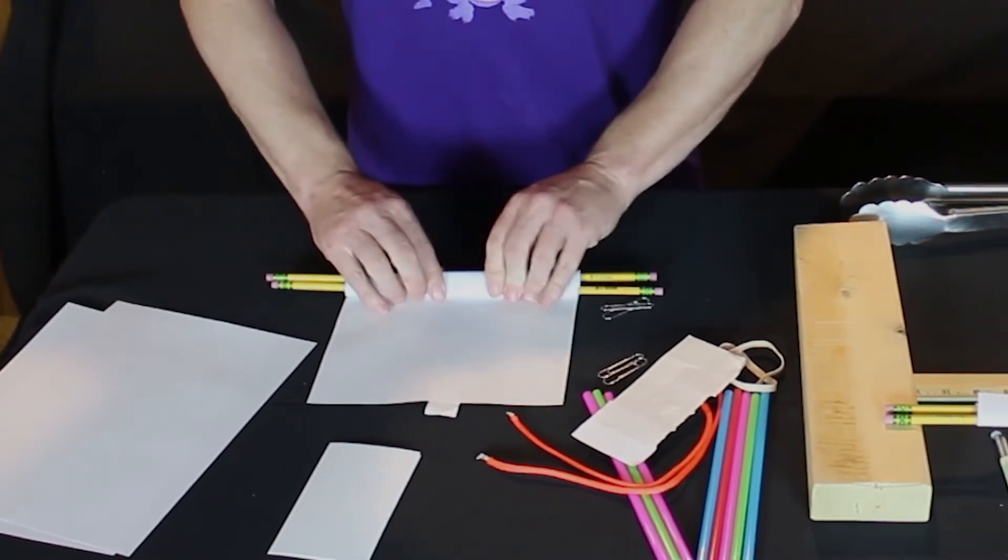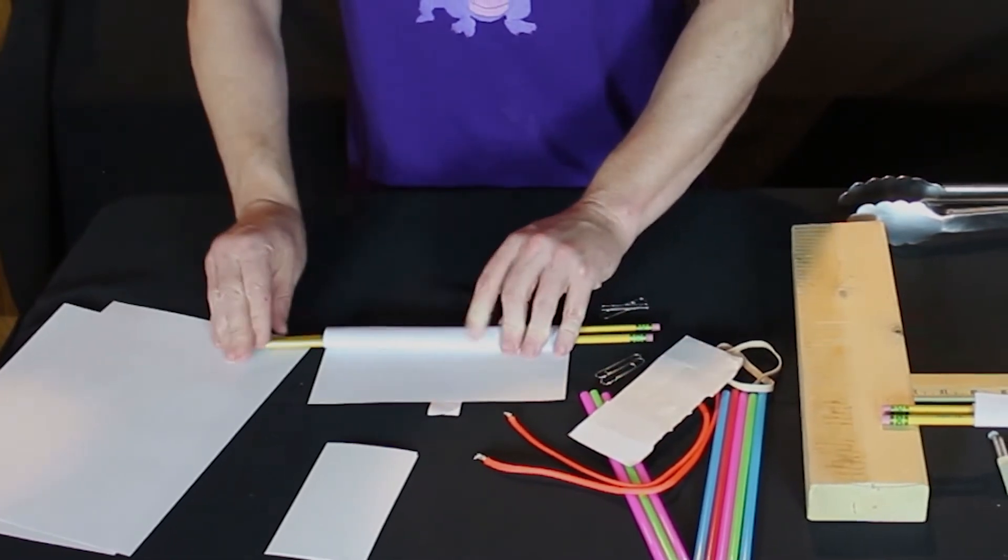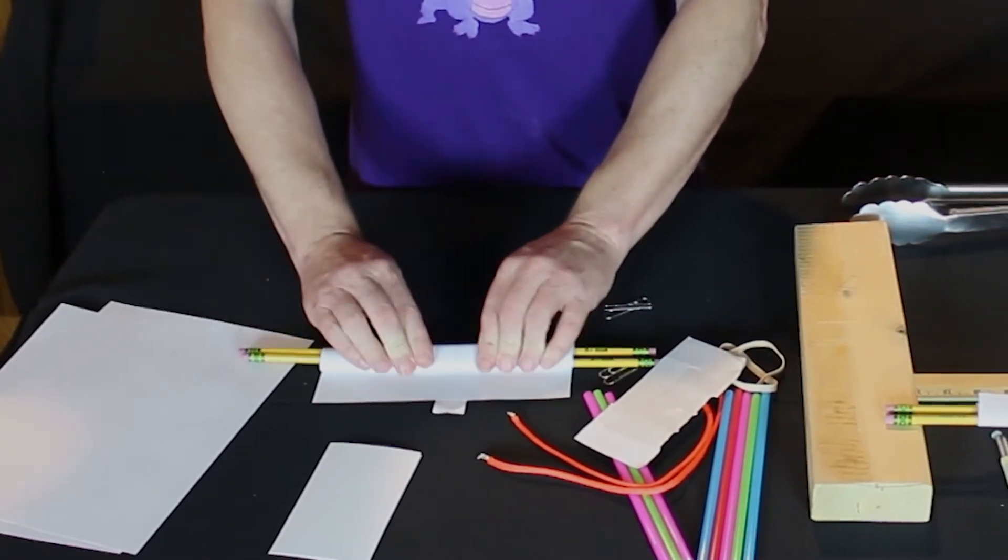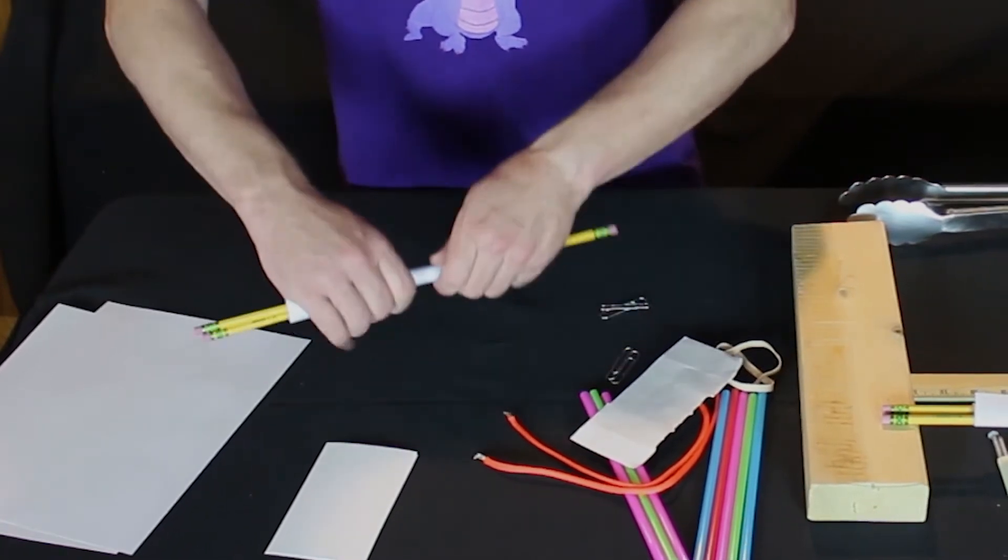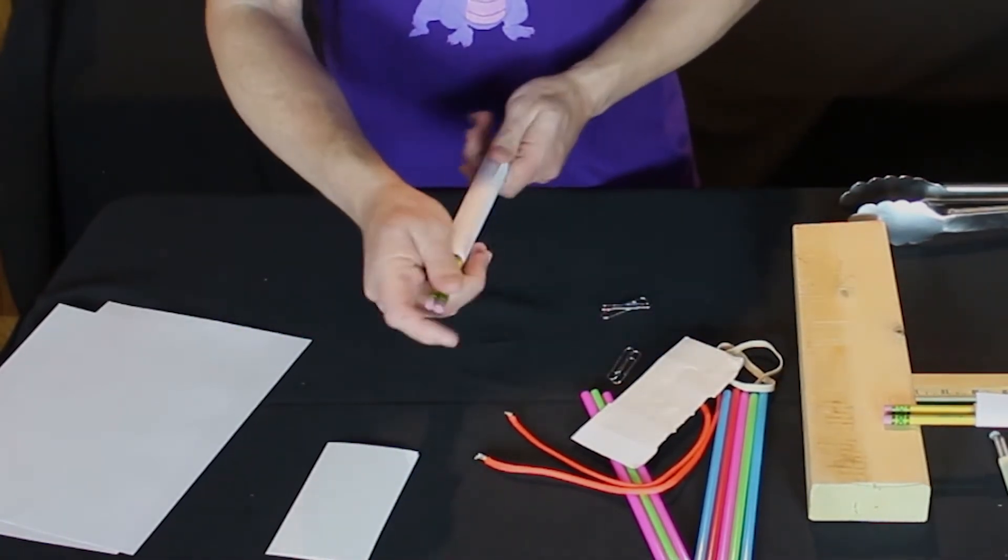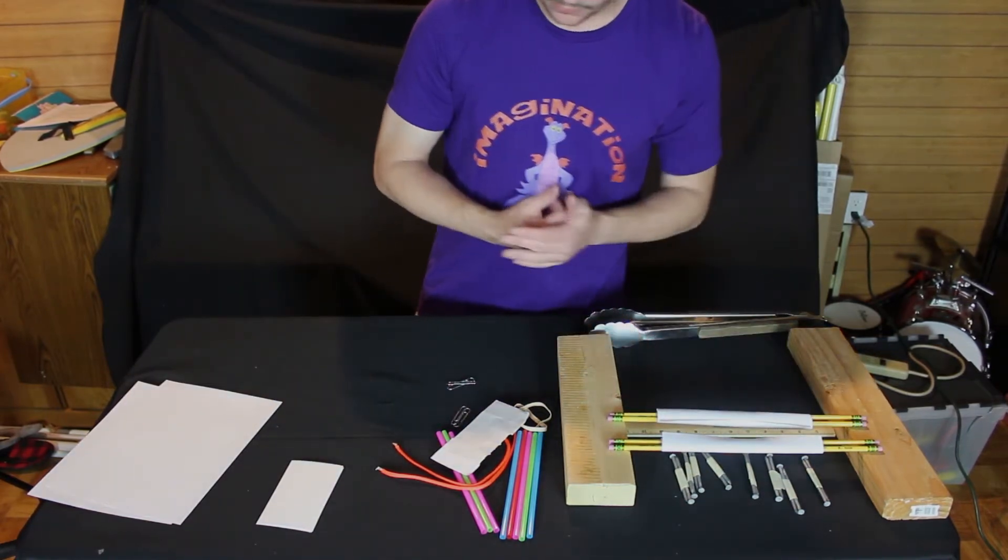So what that does when I roll it up, I don't have to try to make something stick when it's difficult to handle. This thing just rolls right onto the tape and it'll make itself stick. Perfect. Okay. Now we have those two.